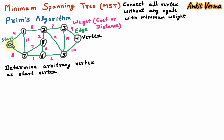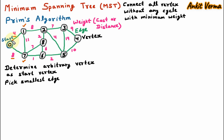From the start vertex we have to find out what other vertices are connected. We can see that vertex 1 is connected with 0 and vertex 7 is also connected with 0, with weights 4 and 8. Out of these we select the minimum weight edge, so 4 is minimum and we pick edge 0 to 1. In step 1, we have added edge from 0 to 1 and traversed two nodes: start node 0 and node 1.